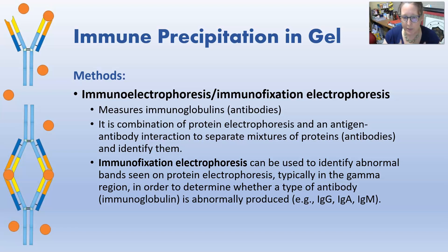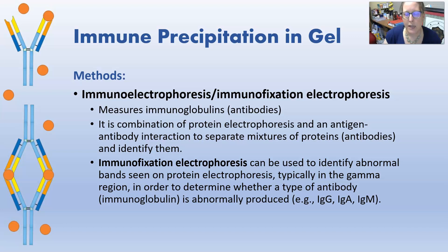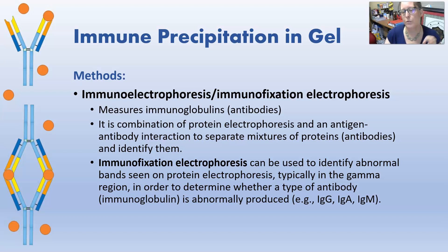Immunofixation electrophoresis can be used to identify abnormal bands seen on protein electrophoresis. They're typically seen in the gamma region, which is where the gamma globulins or antibodies will precipitate out. That can be done to determine whether the immunoglobulin is abnormally produced and what type is abnormally produced — whether it's too much IgG, IgA, or IgM. Immunofixation can help us answer that question.